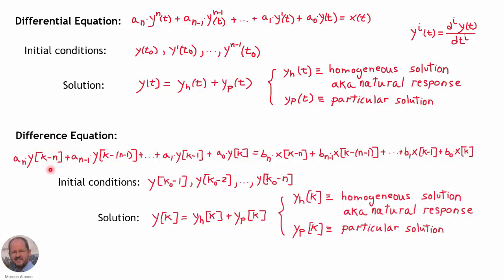In the case of difference equations it's very similar. We have a difference equation with constant coefficients: a sub n times the k minus n sample of the variable y, and so on, with an excitation. Again, to solve this difference equation we need some initial conditions, and the solution is given by the addition of the homogeneous solution, or natural response, plus the particular solution.